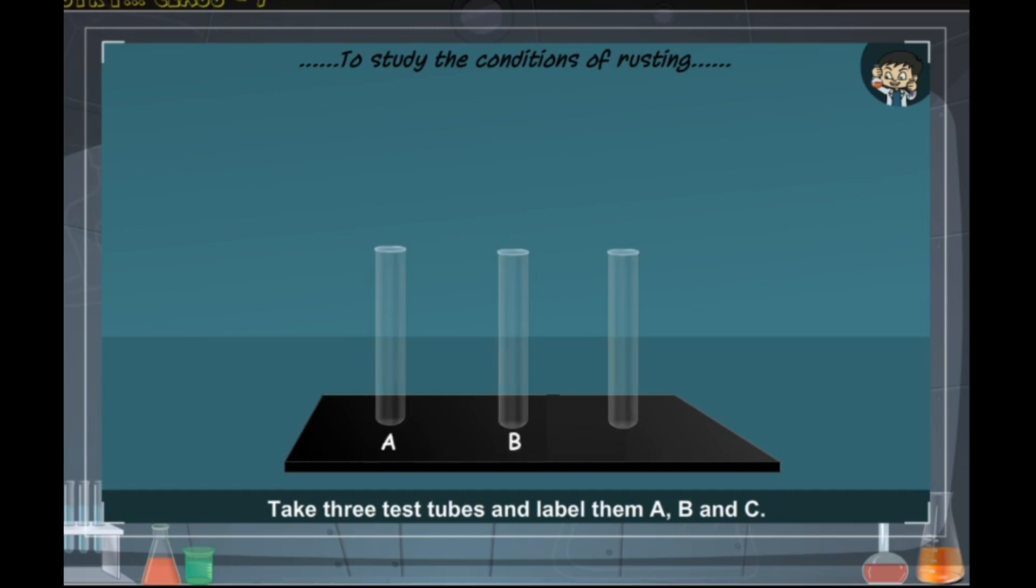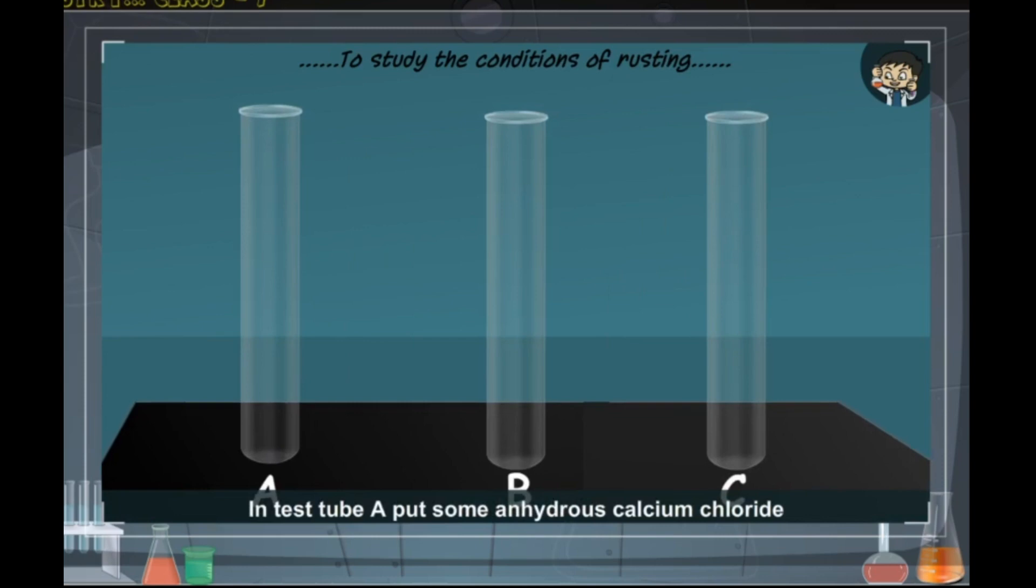Method: Take three test tubes and label them A, B, and C. Test tube A: In test tube A, put some anhydrous calcium chloride along with a few iron nails.